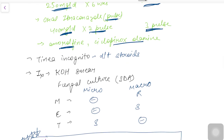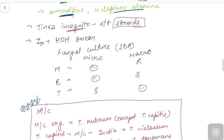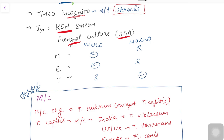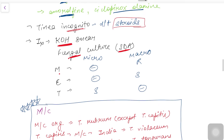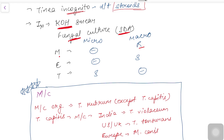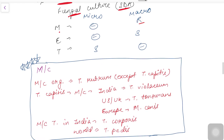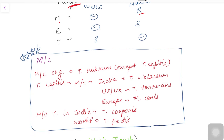Tinea incognito occurs due to steroid application — when a patient with tinea applies steroids, itching is initially reduced but the lesion extends. For investigations, KOH shows fungal hyphae. Fungal culture on Sabouraud's dextrose agar shows microconidia and macroconidia. Remember: in Microsporum, microconidia are absent and macroconidia are rough-walled. You also need to remember the features for Epidermophyton and Trichophyton accordingly.